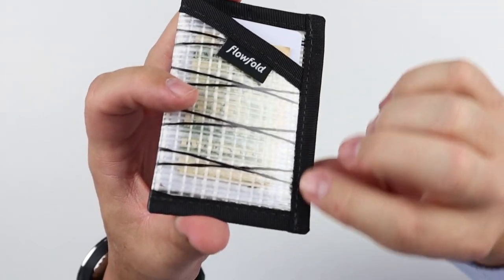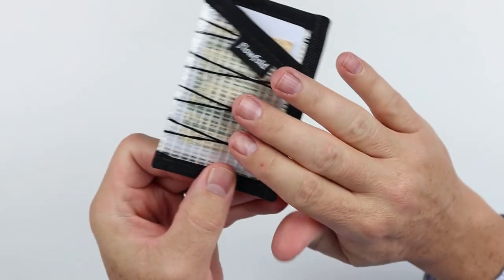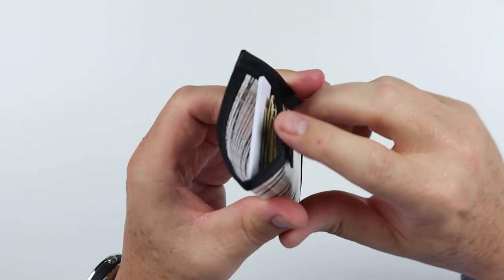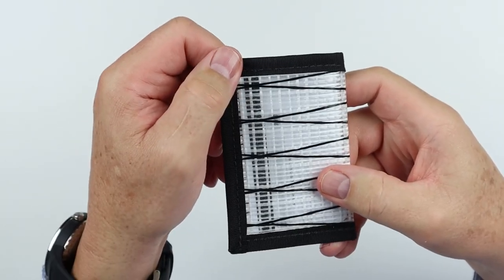You can kind of get a feel here, the sewn ribbon that essentially outlines this folded, a couple of times folded sailcloth here, and it just keeps it nice and clean and neat. It's priced for $18.